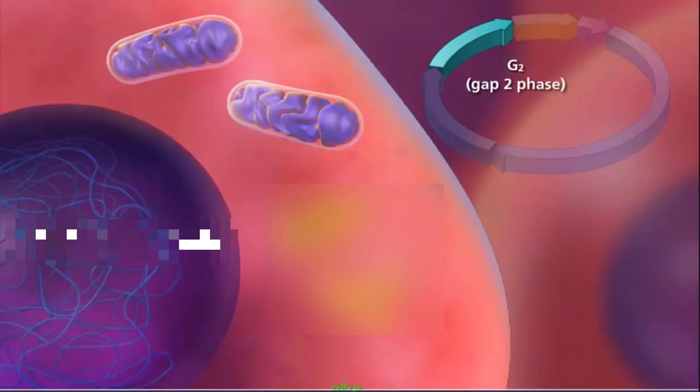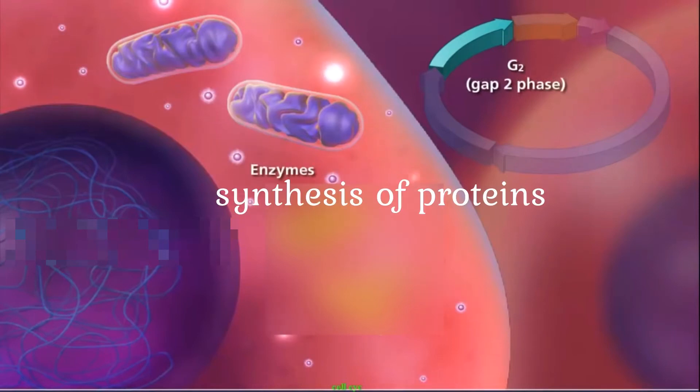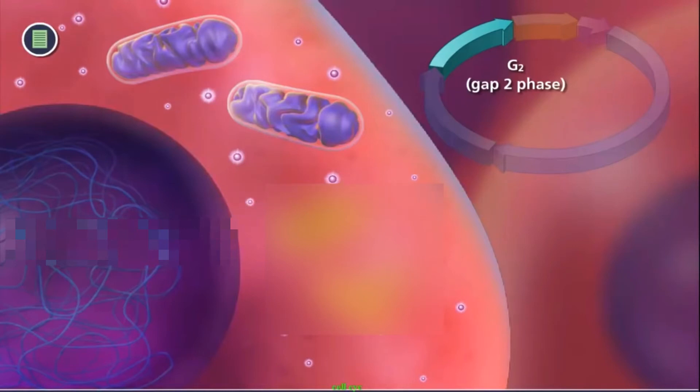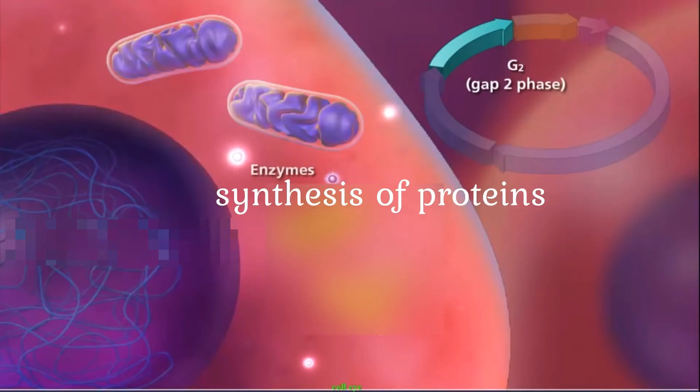G2 phase is the period after DNA synthesis has occurred but prior to the start of prophase. The cell synthesizes proteins and energy stores as the cell continues to increase in size. The G2 phase is the second gap phase.